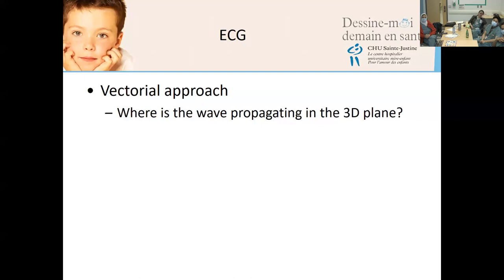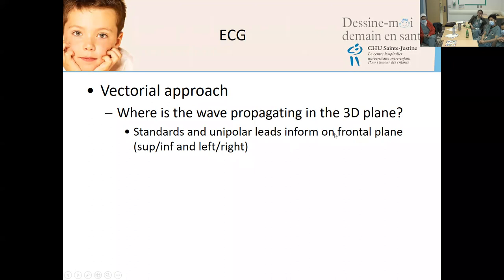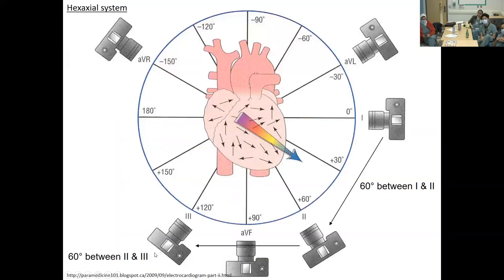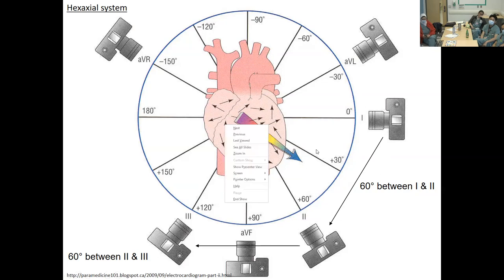We use a vectorial approach to capture the average direction of electricity in the 3D plane. Standard and unipolar leads inform the frontal plane; precordial leads inform the horizontal plane. Think of leads like cameras taking pictures from different angles — front, back, under, above. The hexaxial system helps understand the overall average directionality of the current. You can see that different degrees of plane help understand where the electrical current is going on average.